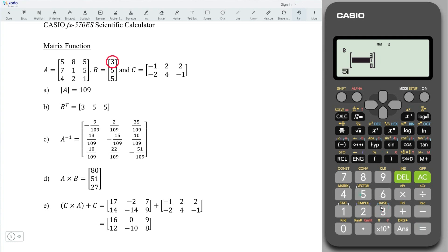Enter the values. 3, equal, 5, equal, 5, equal. Again, press on AC.